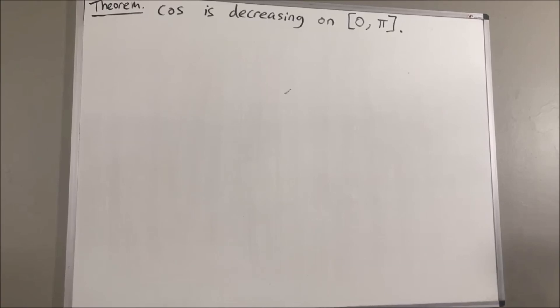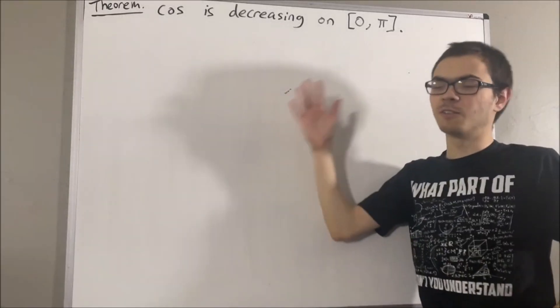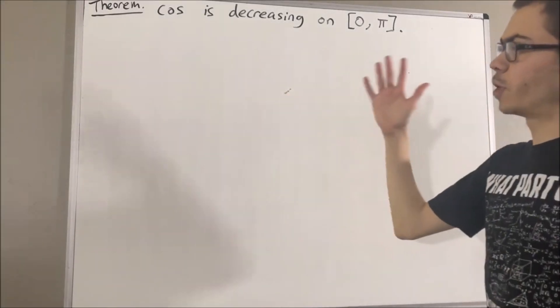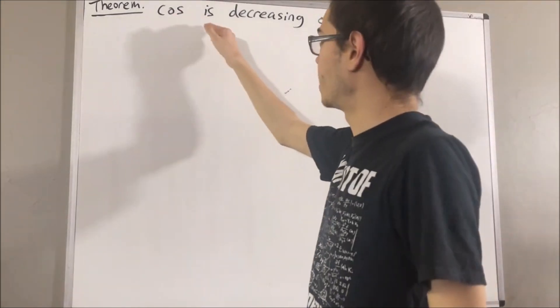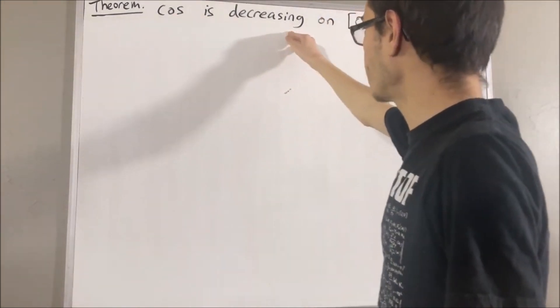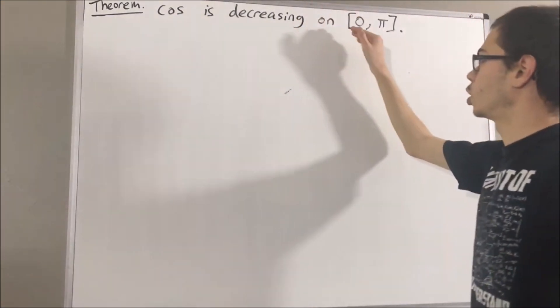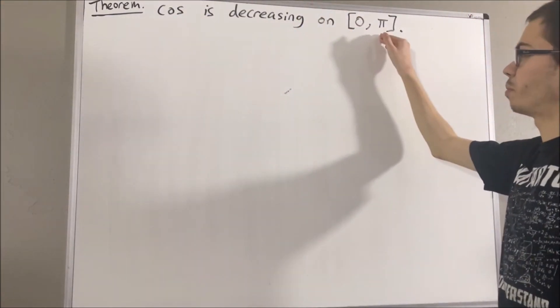Hello! In this video, we are going to prove the following theorem: cosine is a decreasing function on the closed interval 0 to pi.